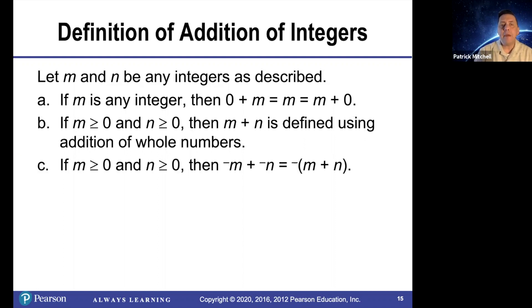If m and n are both greater than or equal to zero, then negative m plus negative n is equal to the opposite of m plus n. So for example, negative four plus negative three should be negative seven.